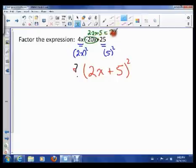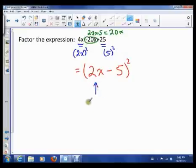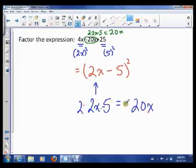And this is equal to 20x. But I have negative 20x. So that means the only change I need to make is go in here and turn that into a minus. And now I know that's true. So see how this is my a? So that becomes, so this squared is 4x squared. This squared is 25. And if I do 2x times 5, negative, and times 2, I get negative 20x, which is right there.